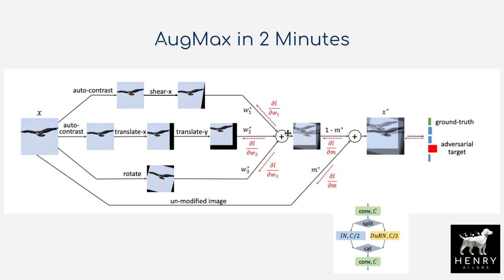These three different RandAugment-transformed images are pixel-wise averaged together using the MixUp algorithm — for each coordinate in the spatial grid, the pixel value is averaged to form the new image. The weighting between the images is determined by an adversarial search, with weights w1, w2, w3 learned adversarially, plus m-star weighting the original un-augmented image to form the final training instance.